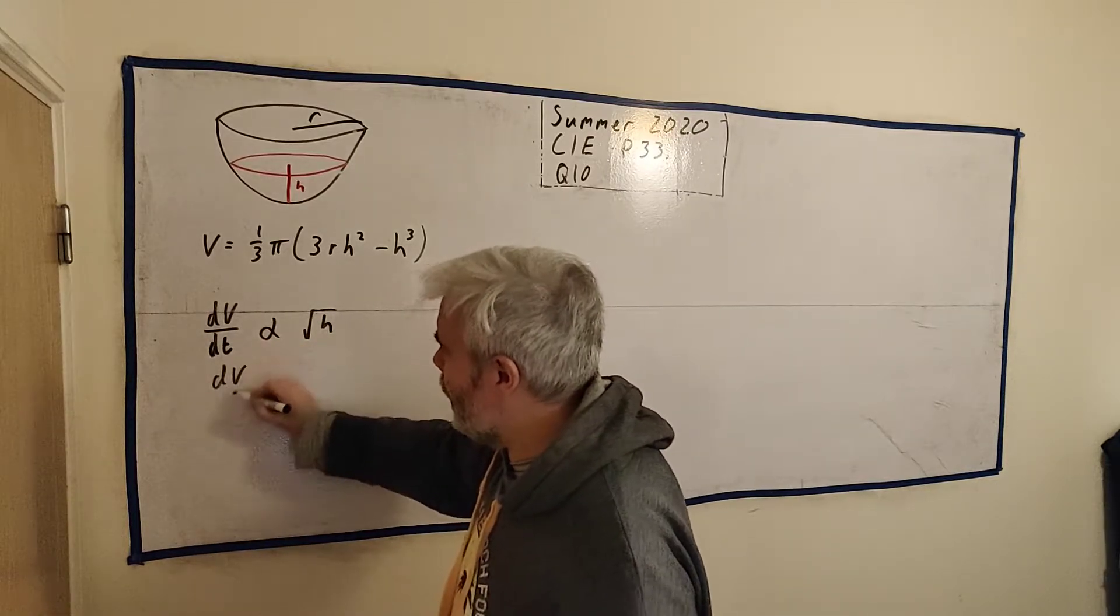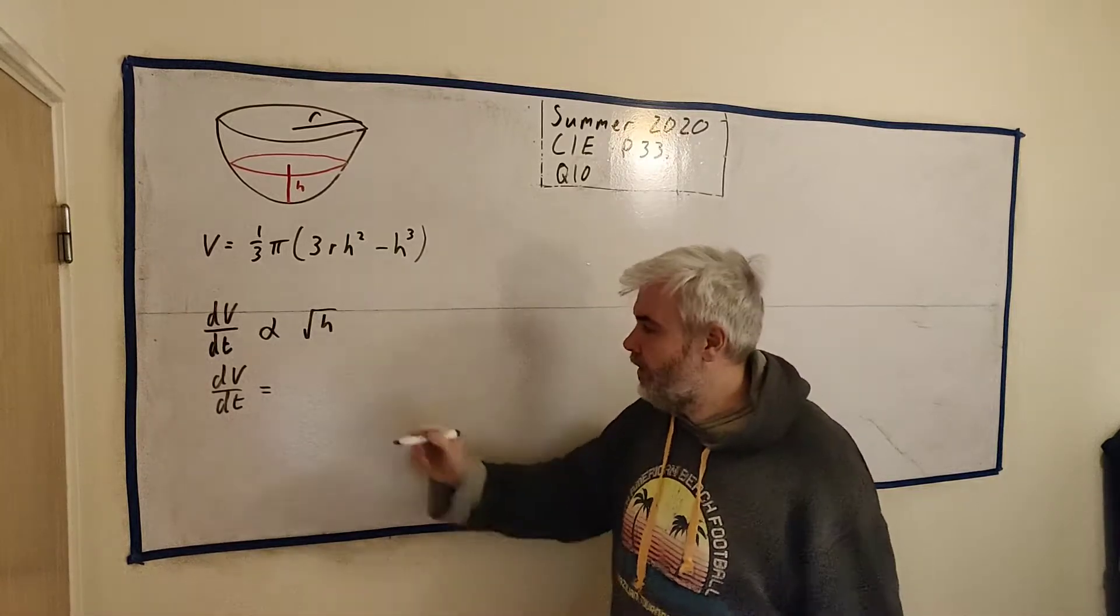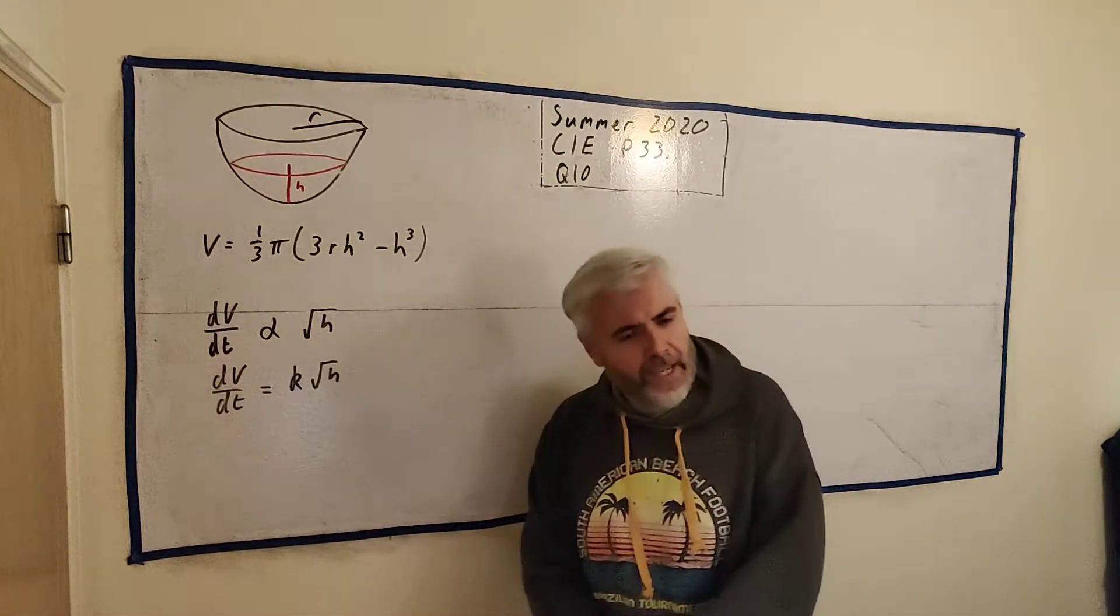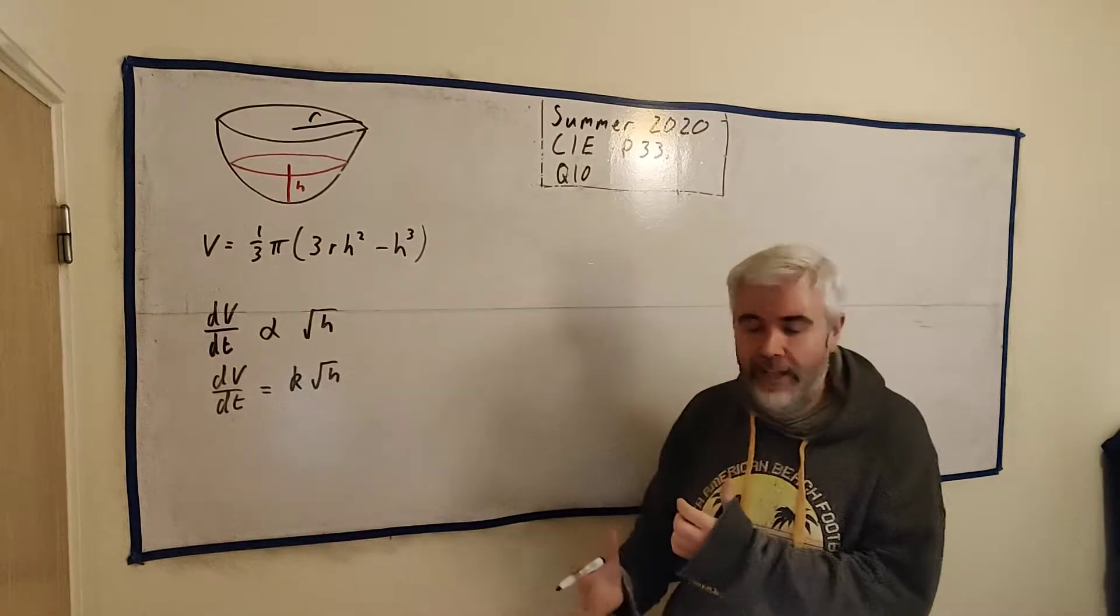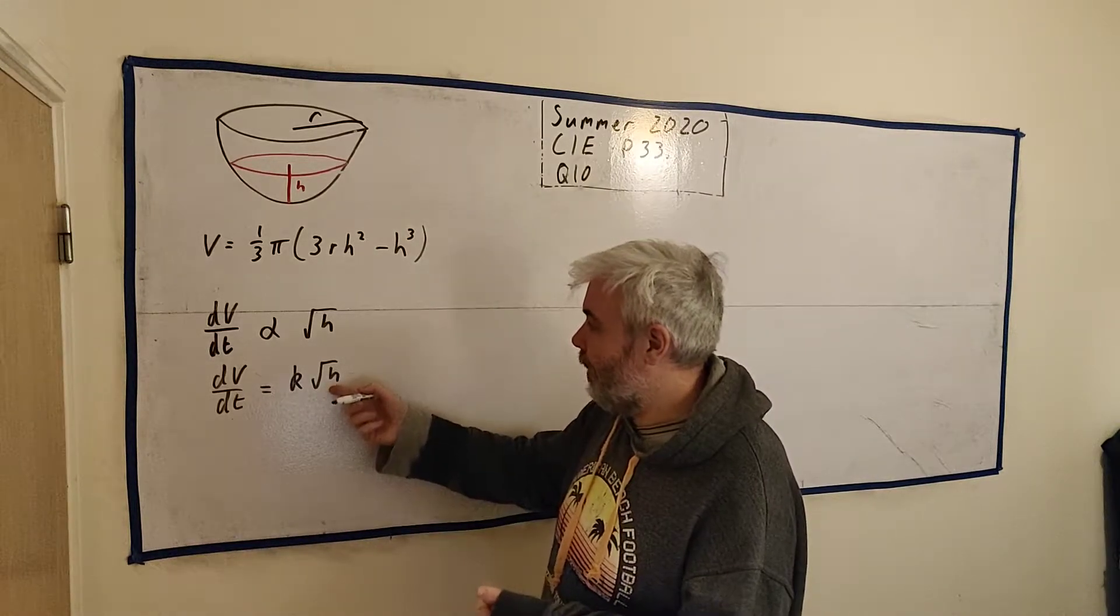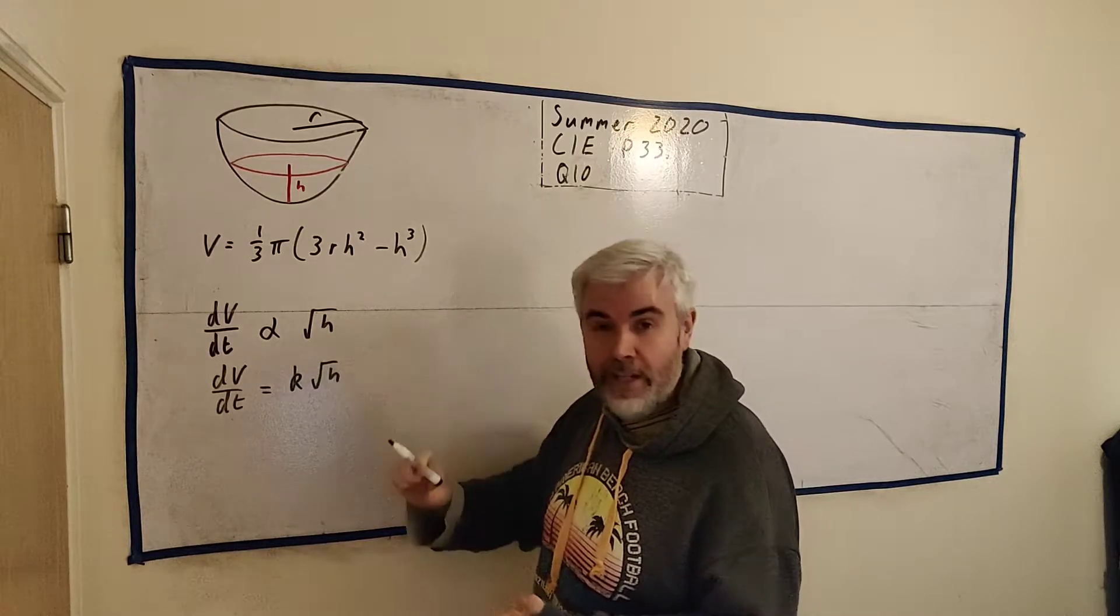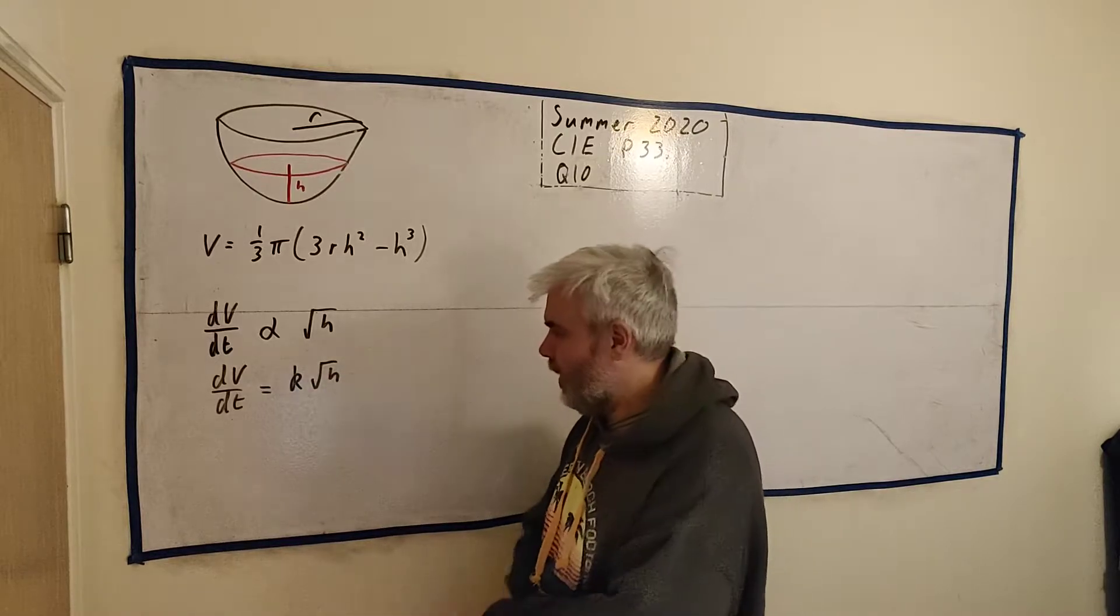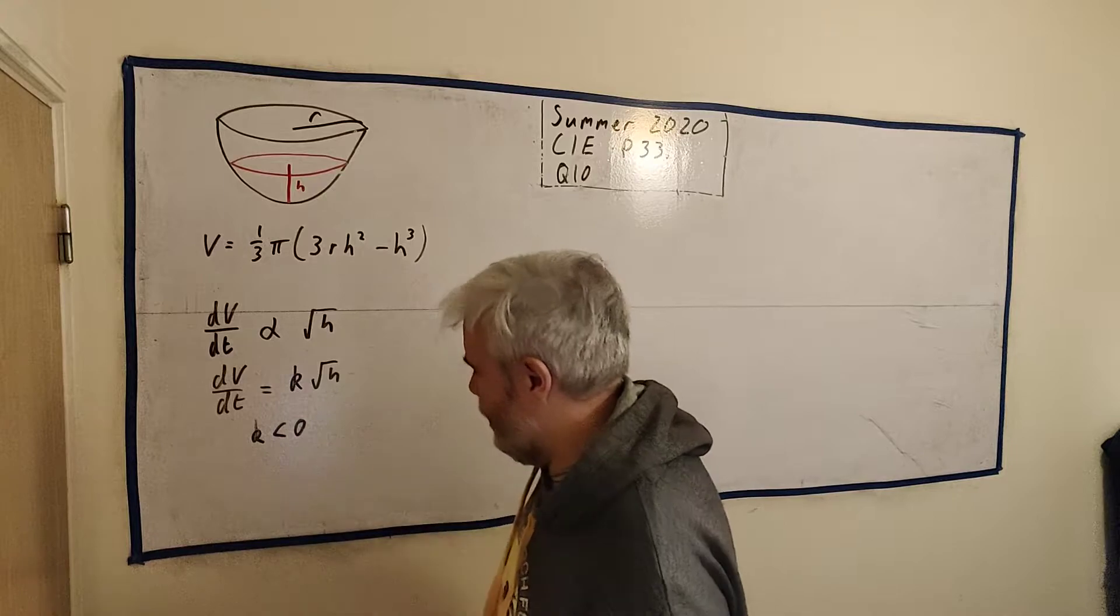They tell us it's proportional to the square root of h. So that's another piece of information we need. It's easy to change proportionality - we just put it equals to some sort of constant. Some constant k times square root of h. Now k is actually less than 0. We can tell that because the volume is getting smaller. H is a height, it's a positive number. If the volume is getting smaller, this must be a negative number overall. If h is positive, well k must be negative. So k is less than 0.